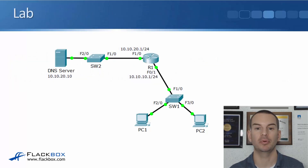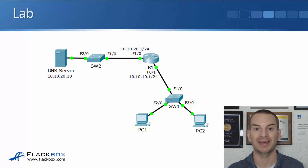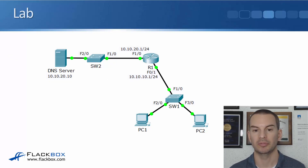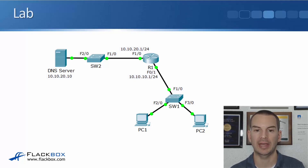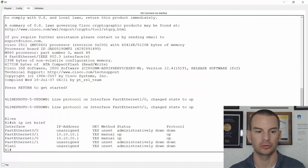So that's it — pretty simple configuration. For the lab demo, we're going to use that exact scenario again. We'll configure R1 with a DHCP scope for the 10.10.10.0 subnet. Let's go on to R1.